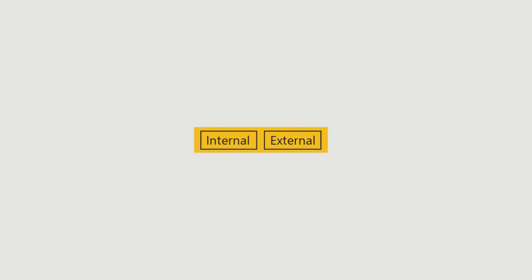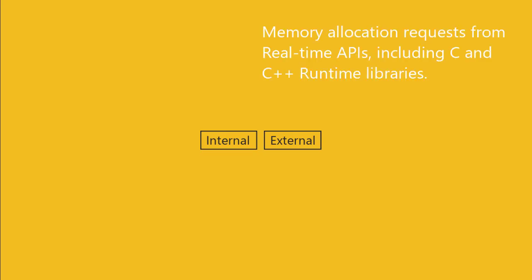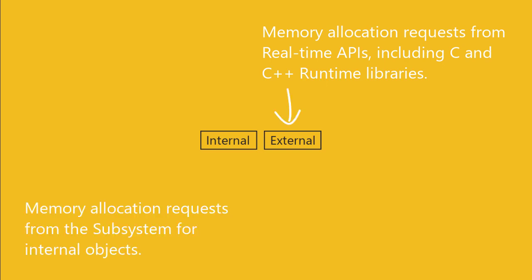Memory allocation requests from real-time APIs, including from CRuntimeLibs, are allocated within the external allocation space. Memory needs from the subsystem for internal objects are allocated within the internal allocation space. Memory is allocated from one of the process's mspaces unless the memory is required to remain over process exit, such as memory for IPC objects and cross-process shared memory. Such allocations are made from the subsystem's mspaces.